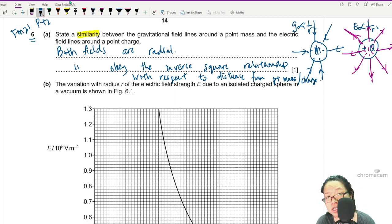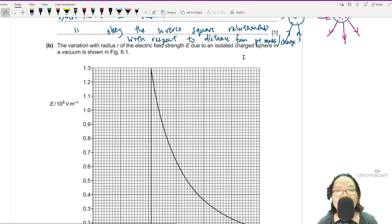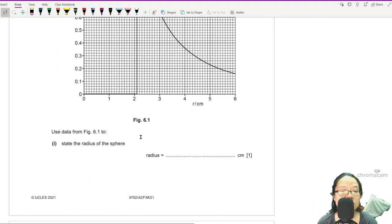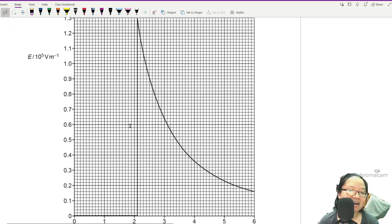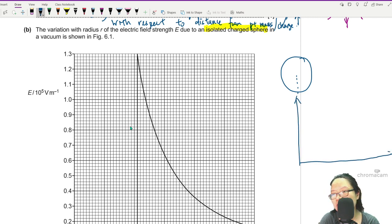Differences would be one is only attractive and one can be attractive or repulsive. So here we have electric field strength due to an isolated charge sphere in the vacuum as shown in figure 6.1. State the radius of the sphere. Well my friends, whenever we think about a sphere or a charge sphere, according to our friend Gauss, although Gauss is not in your syllabus, the caution principle or the logic principle is charges they don't like each other.